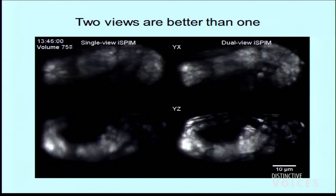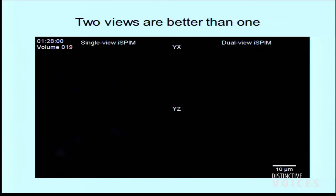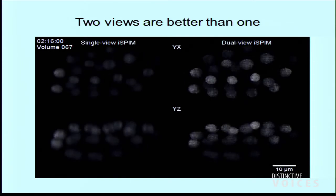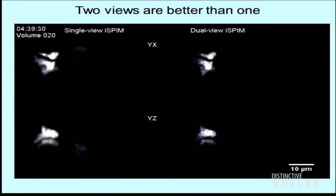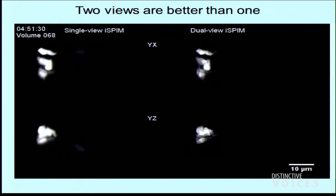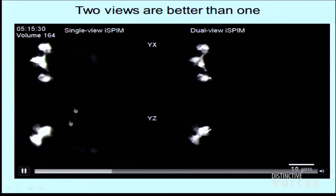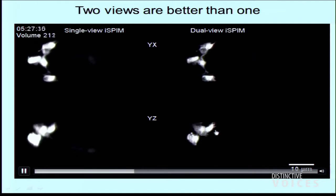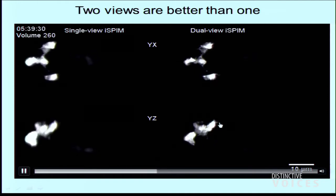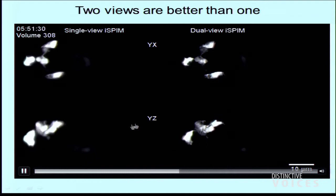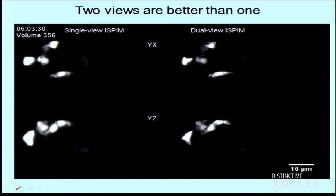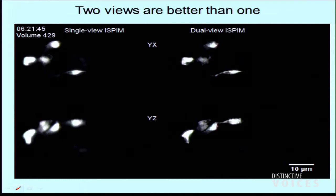Here are the five neurons again in the dual-view images versus the single-view data set. If you look at these neurons, particularly in this view, there are fine processes — growth cones — that are just masked by diffraction in the single-view imaging system. If you want to trace the outline of each cell, having this additional optical path makes it much, much easier.